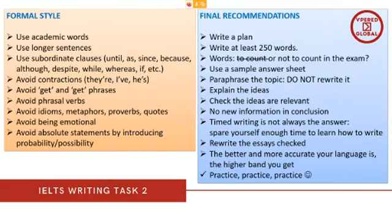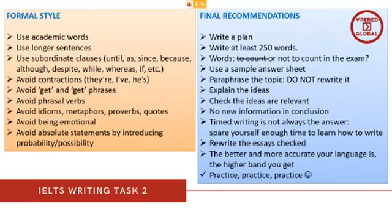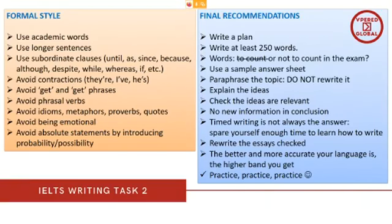Avoid absolute statements — instead introduce probability and possibility. Do not say 'If you eat too much chocolate you will gain weight,' because that may not be true for everyone. Instead of 'A lot of teenagers in America suffer from obesity as a result of eating junk food,' soften it: 'they would probably suffer' or 'they are likely to suffer' or 'they tend to suffer.' This makes your writing more polite, academically appropriate, and less radical.